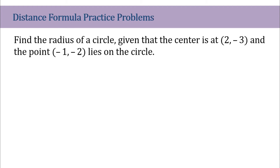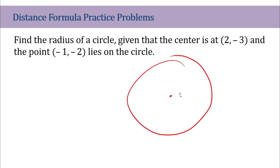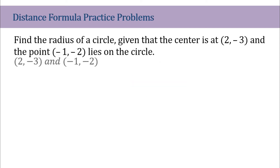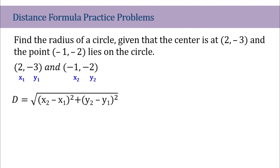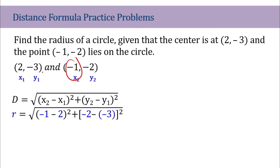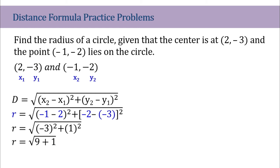Now find the radius of a circle given that the center is (2, -3) and the point (-1, -2) lies on the circle. The radius is simply the distance between these two points. Assigning point 1 as (2, -3) and point 2 as (-1, -2) and substituting into the distance formula: negative 1 minus 2 gives negative 3, and negative 2 minus negative 3 gives positive 1. Negative 3 squared is 9, and 1 squared is 1, so 9 plus 1 is 10. The radius is square root of 10 units.